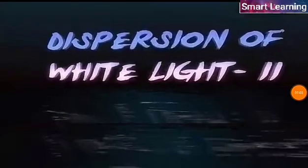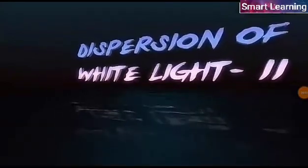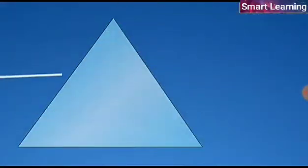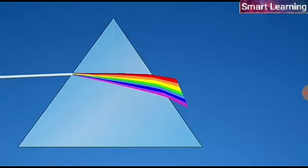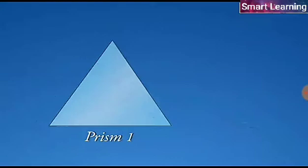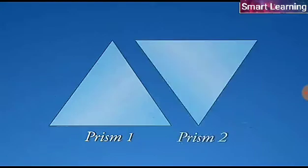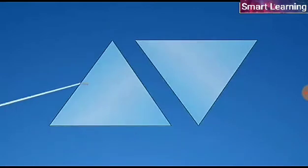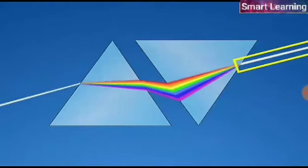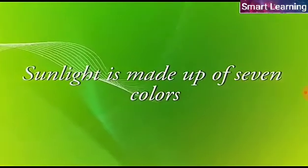Dispersion of white light, part 2. Isaac Newton was the first to use a glass prism for obtaining the spectrum of sunlight. He further tried to split these colors using a second prism but failed. However, when he placed a second identical prism in an inverted position with respect to the first prism, so as to allow the colors to pass through it, he observed a beam of white light emerging from the other side of the second prism. This observation made Newton conclude that sunlight is made up of seven colors.